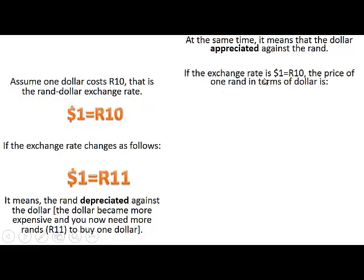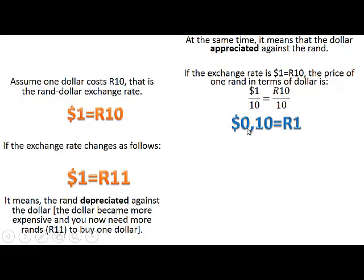So if the exchange rate is $1 equals 10 rand, the price of 1 rand in terms of a dollar can be calculated. We divide by 10 on both sides: $1 divided by 10 gives us $0.10, or 10 American cents, which equals 10 divided by 10, which is 1 rand. So 10 American cents equals 1 rand.